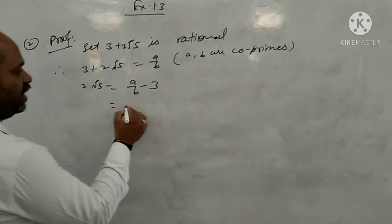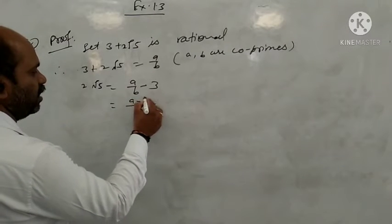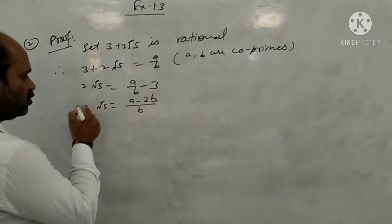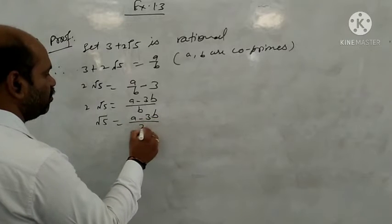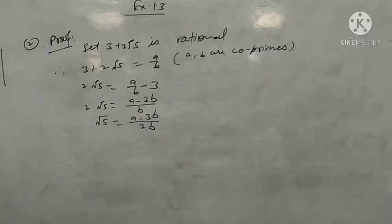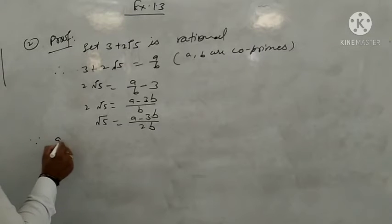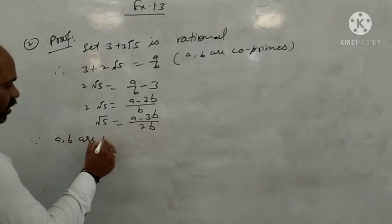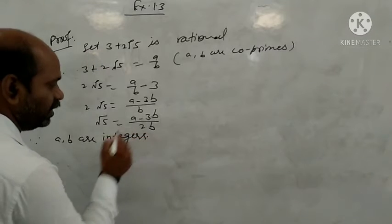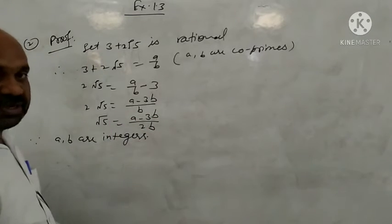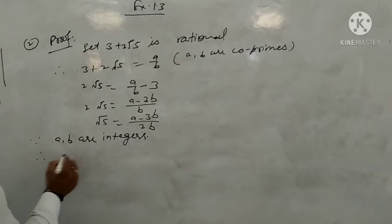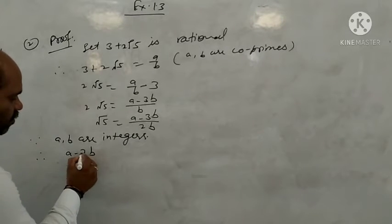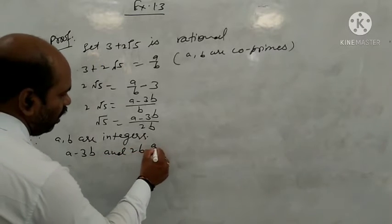From 3 + 2√5 = A/B, rearranging: 2√5 = A/B − 3, which gives 2√5 = (A − 3B)/B. Therefore, √5 = (A − 3B) upon 2B. Since A and B are integers, A − 3B and 2B are also integers, because subtraction and multiplication of integers are integers.